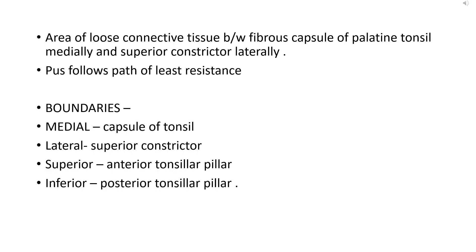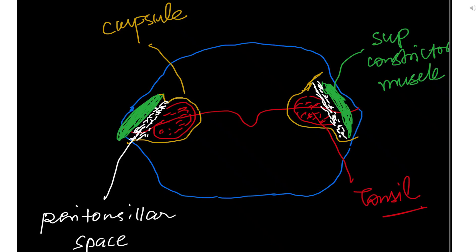The boundaries of the peritonsillar space: medially, it is bounded by the capsule of the tonsil; laterally, by the superior constrictor muscle; superiorly, by the anterior tonsillar pillar; and inferiorly, by the posterior tonsillar pillar. In this handmade diagram, the tonsil is marked in red, the superior constrictor muscle in green forms the lateral boundary, the capsule is marked in yellow, and the whitish dots indicate the peritonsillar space between the capsule and the superior constrictor muscle.